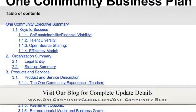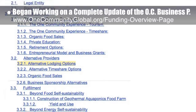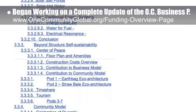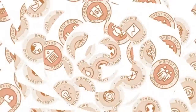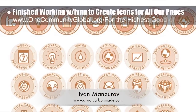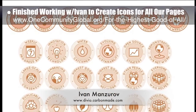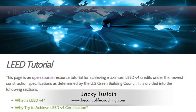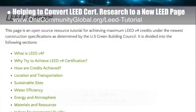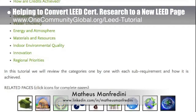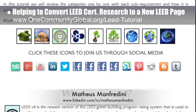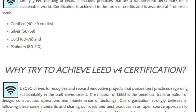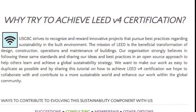This week the core team began working on a complete update of the One Community business plan, reformatting it on a Google Doc for easier collaboration and sharing — about 2% done with the complete rewrite. We also finished working with Ivan Manzaroff, artist and illustrator, to create new icons for all of our pages. Last but not least, Jackie Tustain, freelance blogger, began converting LEED certification research done by Matteus Manfredini, civil engineering student and urban design coordinator, into a webpage — now approximately 15% complete.